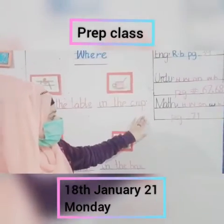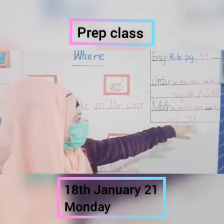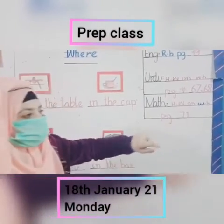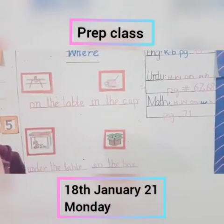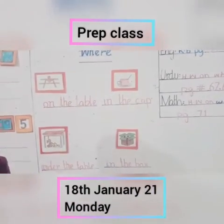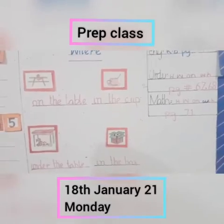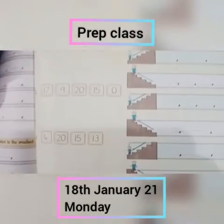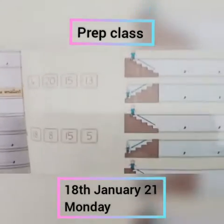Prep class, our next work is math. Look at the board — book page number 71. We have got two days of ascending and descending orders. We will review it. Prep class, look at your page, page number 71 — ascending and descending order.